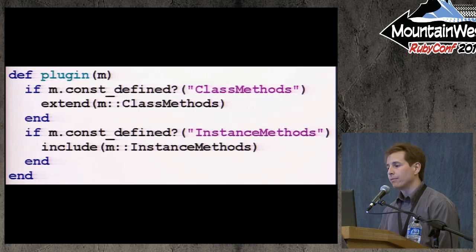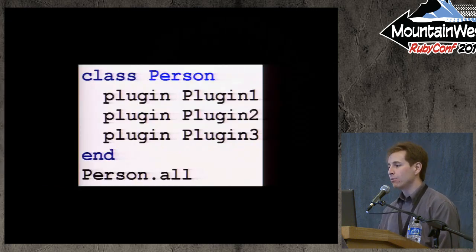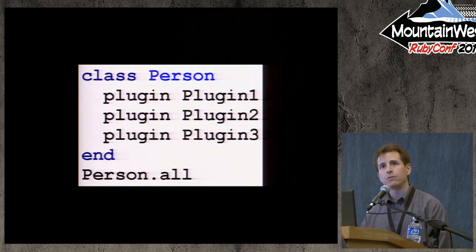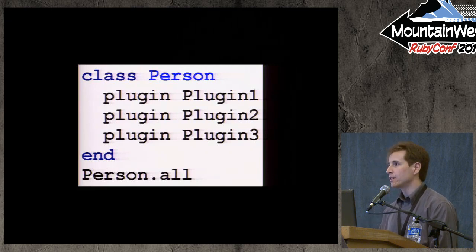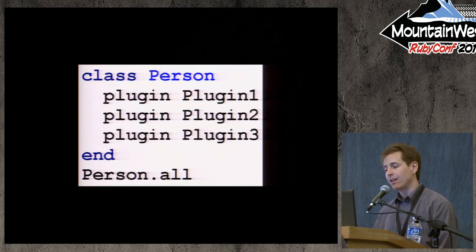With your plugin method set up like that, you can allow the user to extend the class with as many plugins as they want. If all three plugins define the all class method and have it call super, when the user calls person.all it will call the version in plugin 3, then plugin 2, and finally plugin 1. This design approach makes it possible for extensions to have complete control to override any part of the class's behavior while making it easy for the user to extend with any combination of extensions.